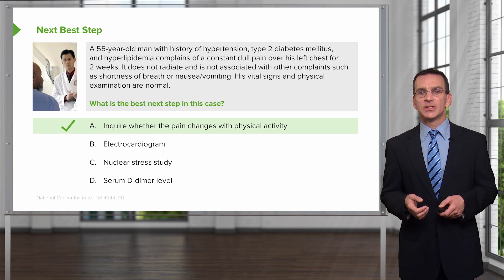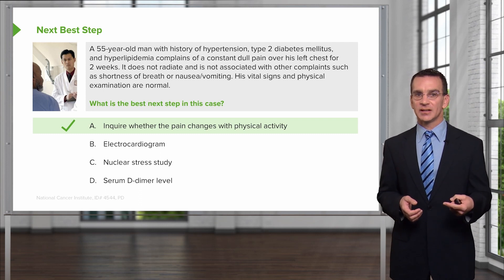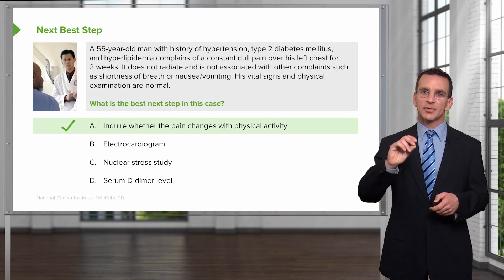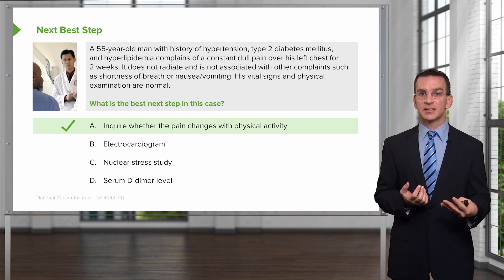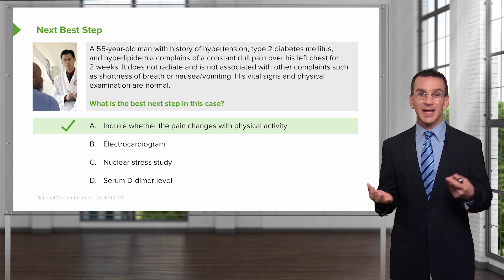His physical exam is all normal. The next best step is to get more history — we are a history-driven specialty if you want to be patient-centered. He probably needs an electrocardiogram, but not before we get more history, because there's a lot left to be discovered in this case just with history alone for risk stratification. Certainly that stratification should come before ordering a nuclear stress study or a serum D-dimer level. In general, when you think about these questions from a family medicine perspective, getting more history and observation are generally going to be more profitable answers.